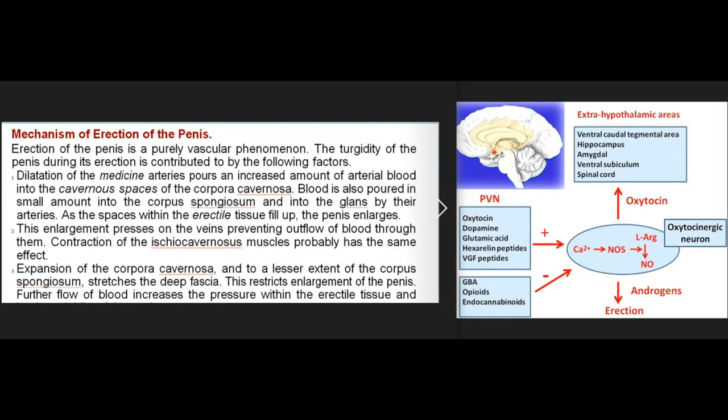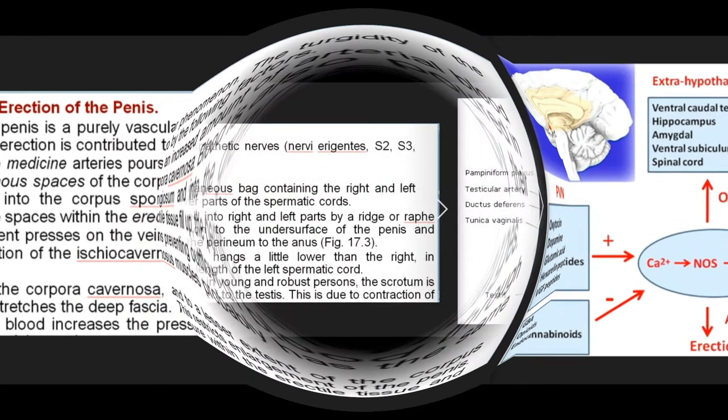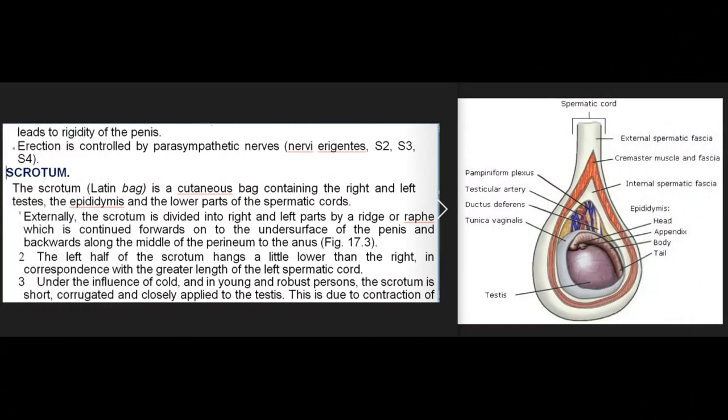Mechanism of Erection of the Penis: Erection of the penis is a purely vascular phenomenon. The turgidity during erection is contributed to by the following factors: 1. Dilatation of the helicine arteries pours an increased amount of arterial blood into the cavernous spaces of the corpora cavernosa, and also into the corpus spongiosum and glans. As the spaces fill up, the penis enlarges. 2. This enlargement presses on the veins preventing outflow of blood; contraction of the ischiocavernosus muscles probably has the same effect. 3. Expansion of the corpora cavernosa, and to a lesser extent of the corpus spongiosum, stretches the deep fascia, restricting enlargement and increasing pressure within the erectile tissue, leading to rigidity. 4. Erection is controlled by parasympathetic nerves.